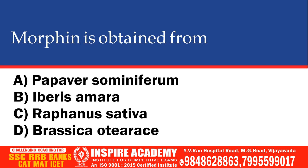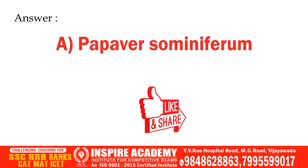Morphine is obtained from which plant? Options: Papaver somniferum, Iberis amara, Raphanus sativa, Brassica oleracea. The correct option is Papaver somniferum.